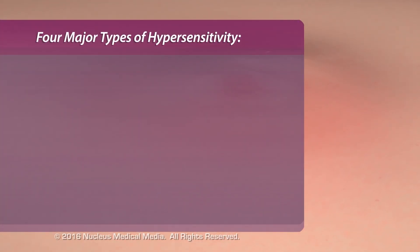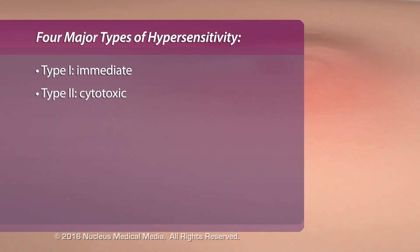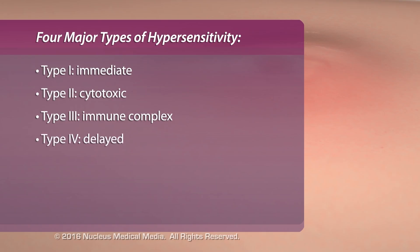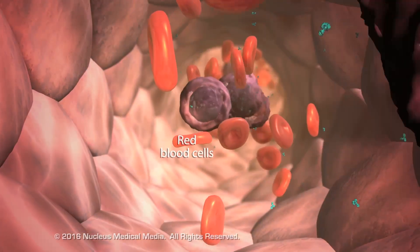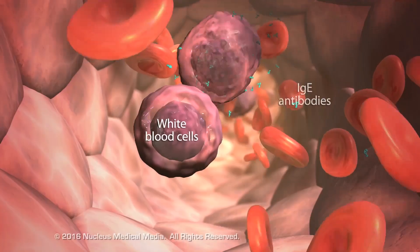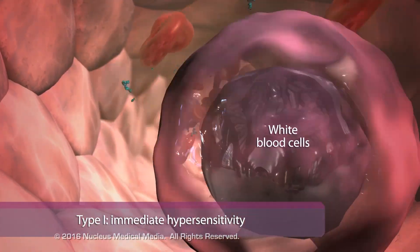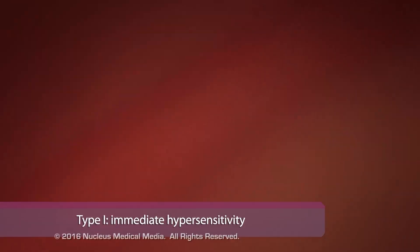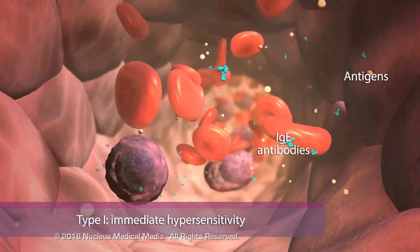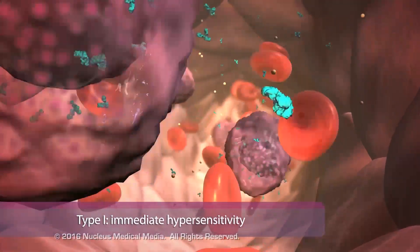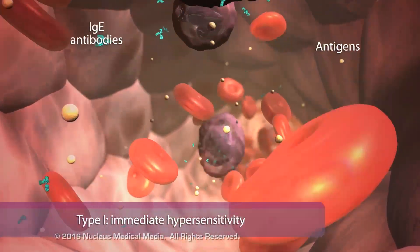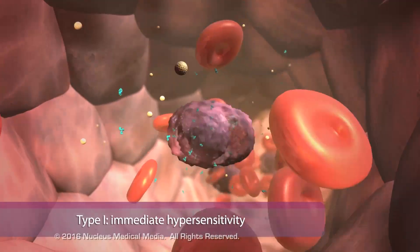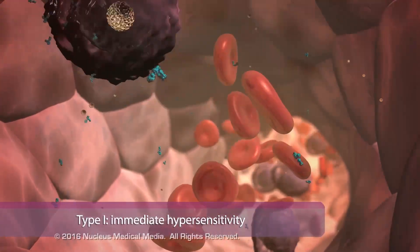There are four major types of hypersensitivity. The most common type is type 1, or immediate. This type includes allergies elicited by antigens such as pollen. After initial exposure to this allergen, immune cells create immunoglobulin E antibodies for subsequent exposures.